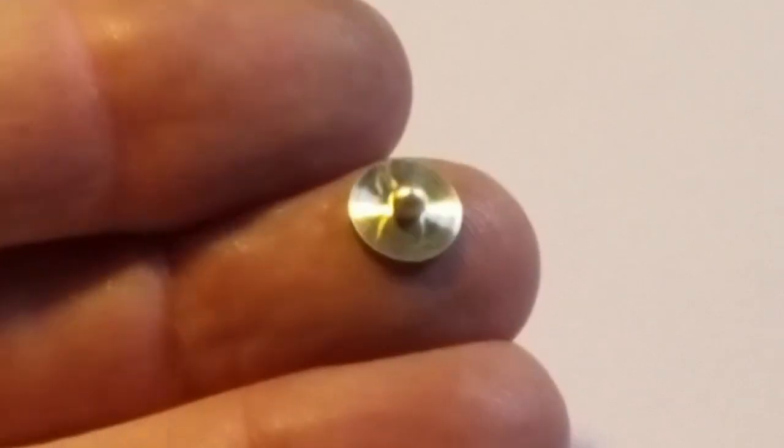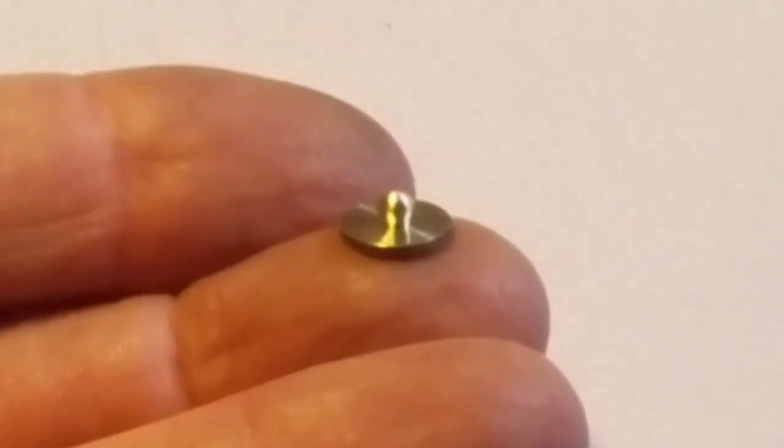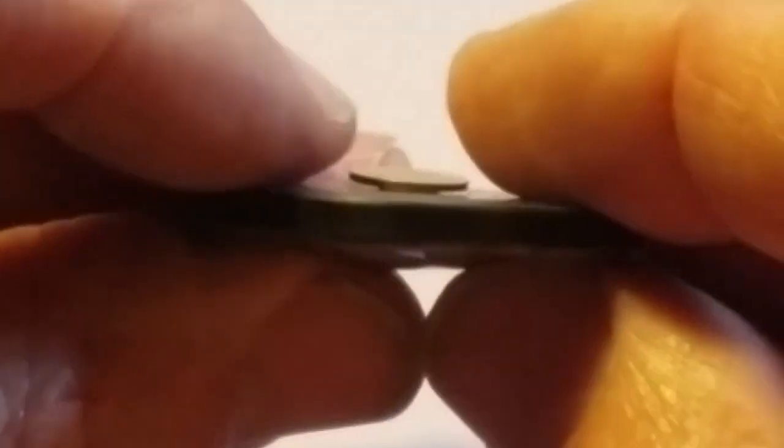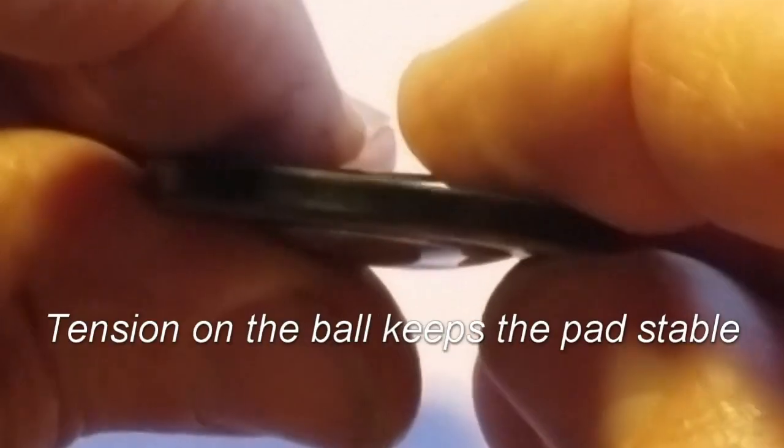The self-leveling pad uses a small ball joint. The ball joint is embedded in the back of the pad. It's mounted to the cup and it's what allows the pad to tilt.